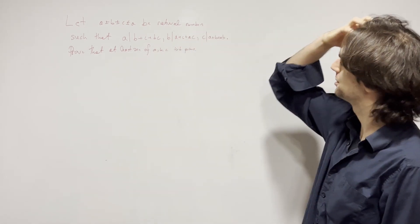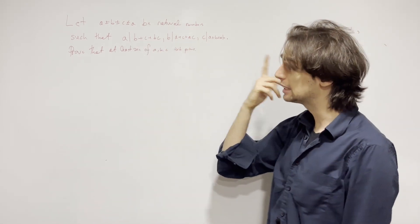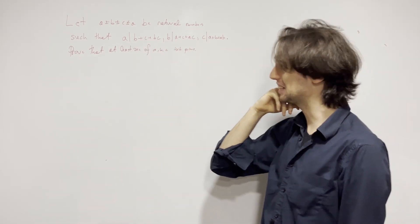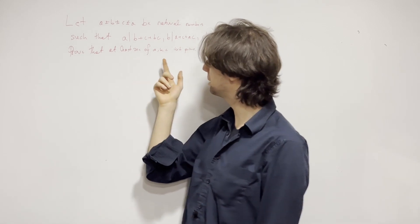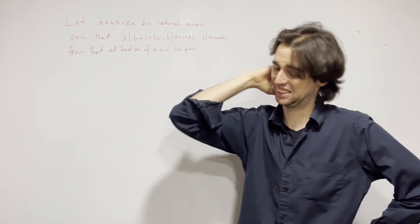I like this problem a lot because it's like A divides something, B divides something, C divides something, these things are different, and then show that at least one of them is not prime, and these numbers are pairwise distinct.